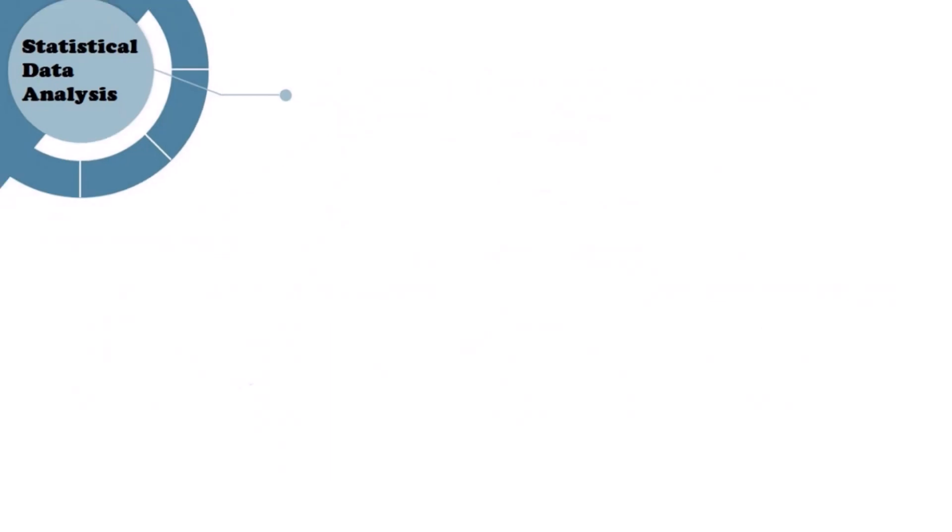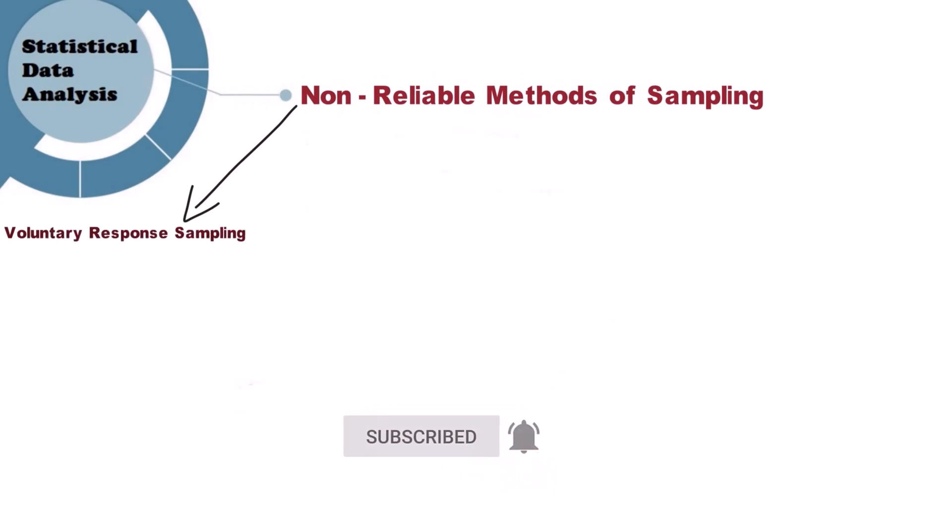Non-reliable methods of sampling: Voluntary response sampling - choosing a sample by sending out a request for members of a population to join. Some might join, and others might not respond. Convenient sampling: Selecting a sample readily available by chance.